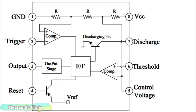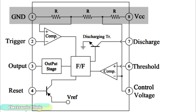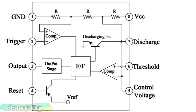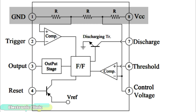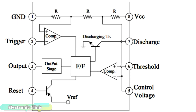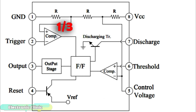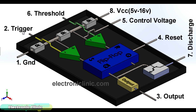Why is it called the 555 timer? This is one of the most commonly asked questions. It is called a 555 timer because of its internal circuit. There are three 5 kilo ohm resistors in the IC which are connected in series between the VCC and ground, and are used to supply two-thirds of the supplied voltage VCC to the inverting pin of the first voltage comparator and one-third of the VCC to the non-inverting input of the second voltage comparator. This is the more simplified inside diagram of the 555 timer IC.